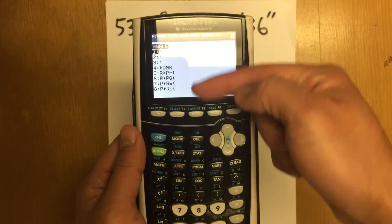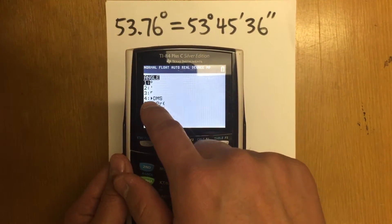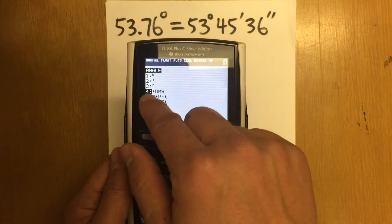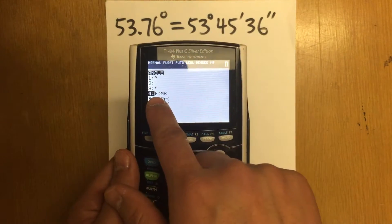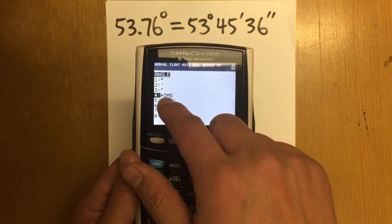Second angle to get to this menu. And I'm going to choose number four, right here. Option number four. The little triangle just means that we are going to do the conversion. And then DMS.